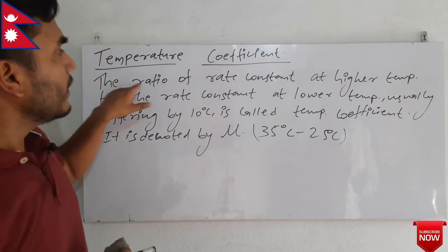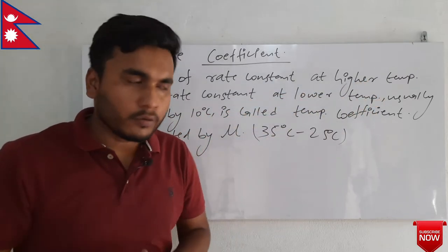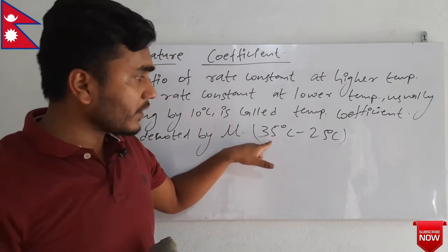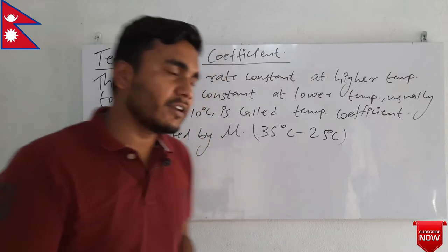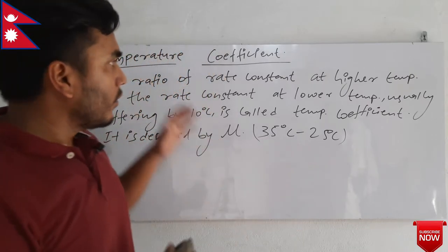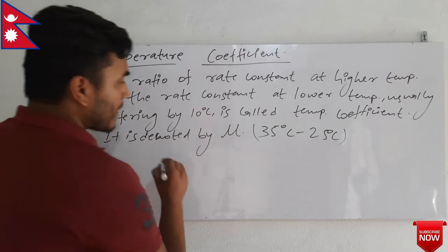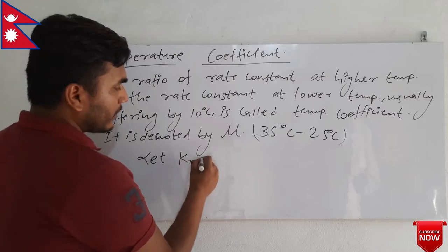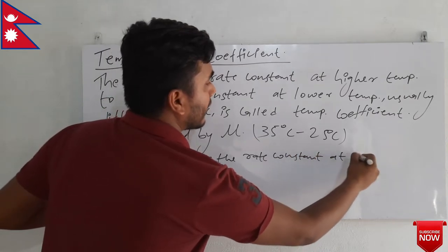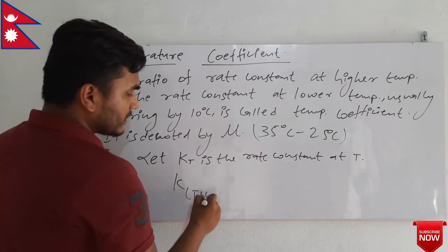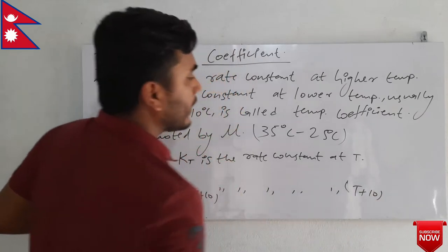I hope everything is clear from the definition. That is, the ratio of rate constant at higher temperature. We know that with temperature, the rate constant also changes. The rate constant at 35 degrees Celsius will be higher than the rate constant at 25 degrees Celsius. If we find the ratio of that rate constant between these two temperatures, we get the temperature coefficient, denoted by mu. Let KT be the rate constant at temperature T, and KT plus 10 be the rate constant at temperature T plus 10 degrees Celsius.